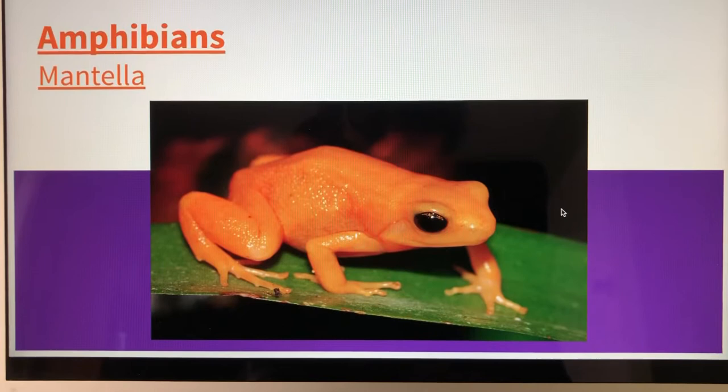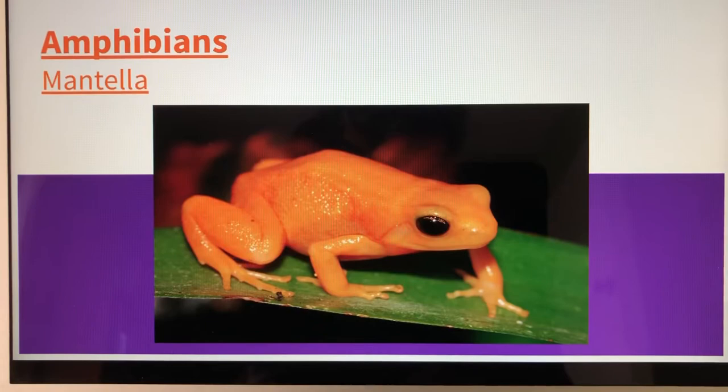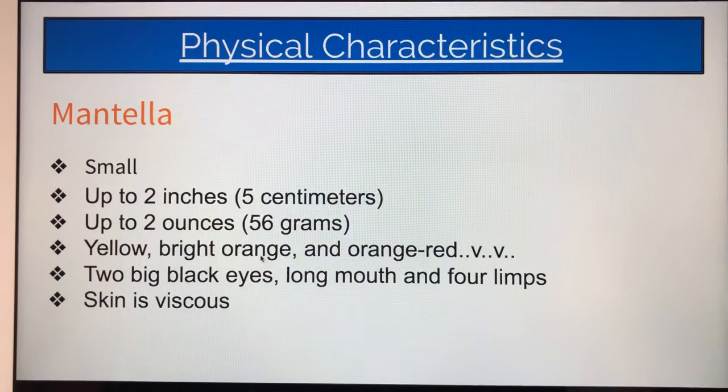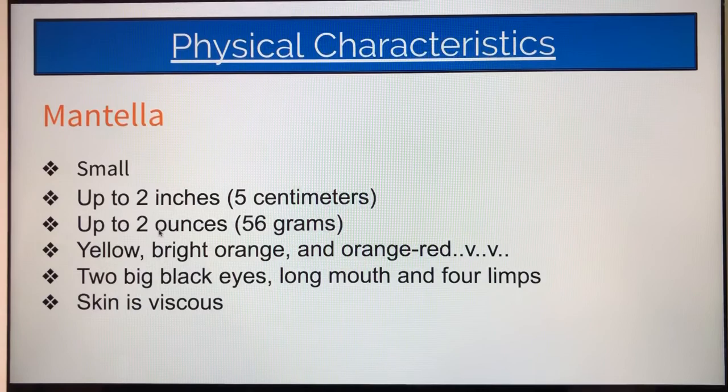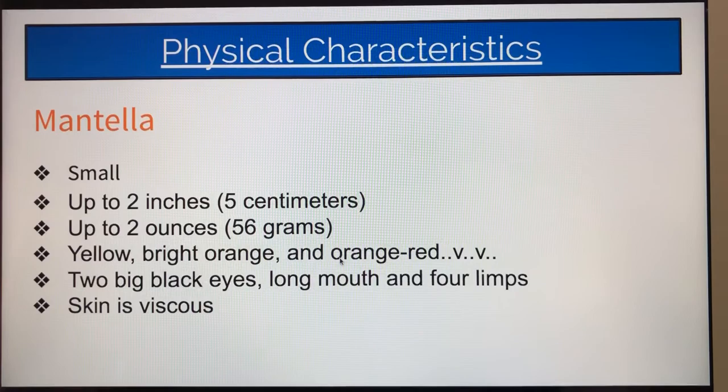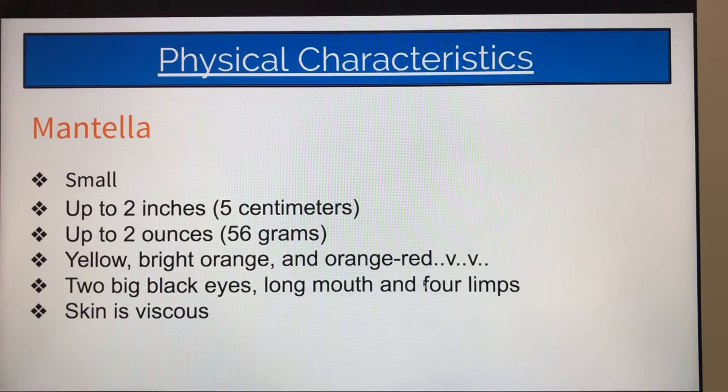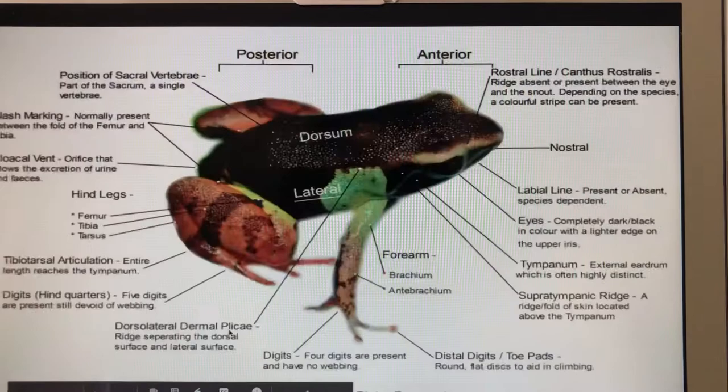Physical characteristics of the mentia: they are small — up to two inches long, up to two pounds. Their color is yellow, bright orange, and red. They have two beady black eyes, a long mouth, and four limbs. Their skin is viscous.